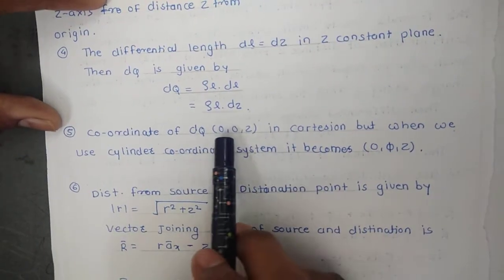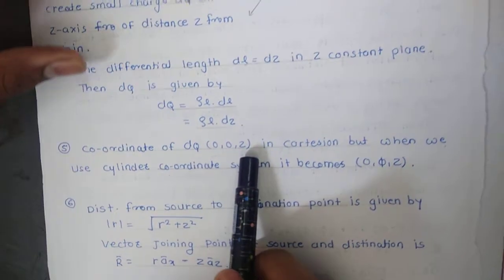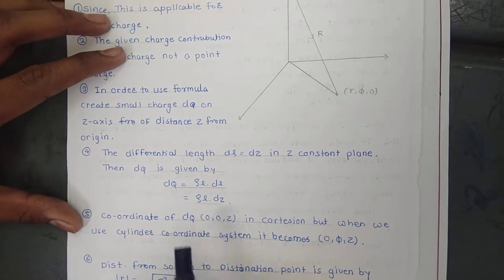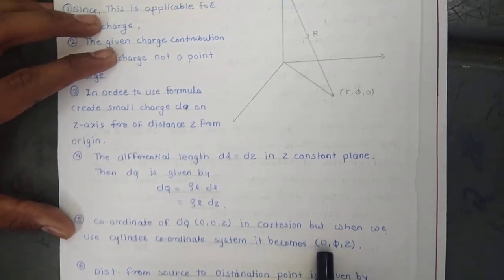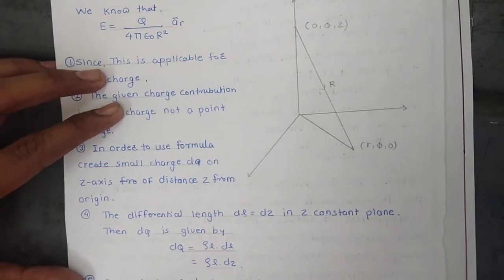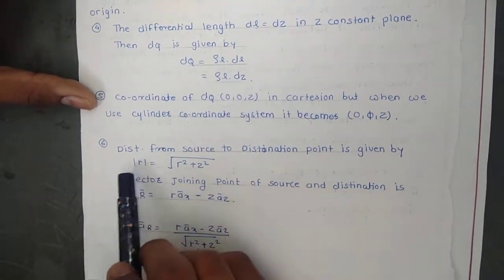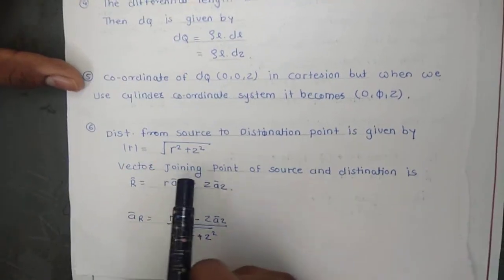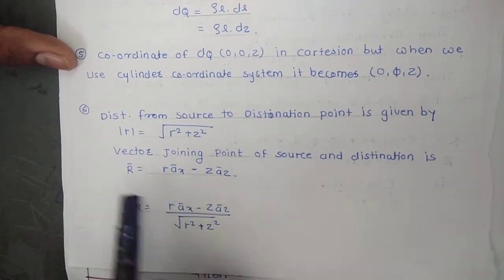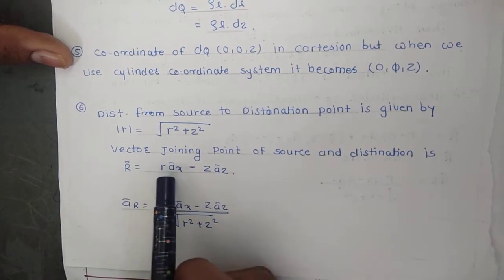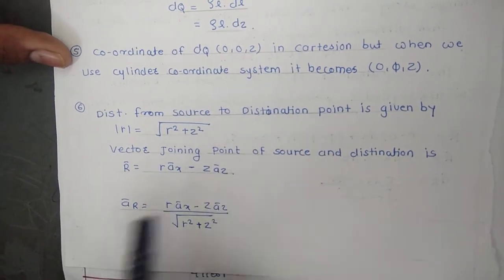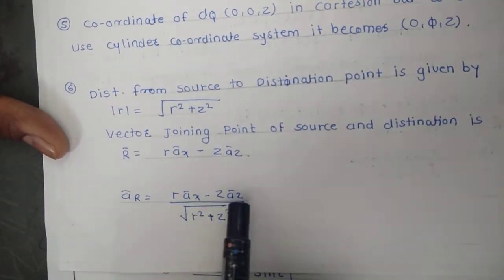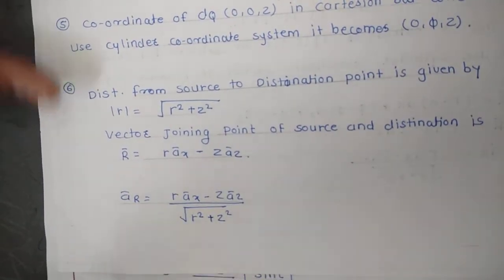The coordinates of DQ are (0, 0, Z) because it is on the Z-axis in Cartesian coordinates, but in the cylindrical coordinate system it becomes (0, phi, Z). The distance from the source to destination point is given by mod R equal to the square root of (R-squared plus Z-squared). The vector joining the source and destination is R equal to R times AR minus Z times AZ. The unit vector is given by AR equal to (R times AR minus Z times AZ) upon the square root of (R-squared plus Z-squared).